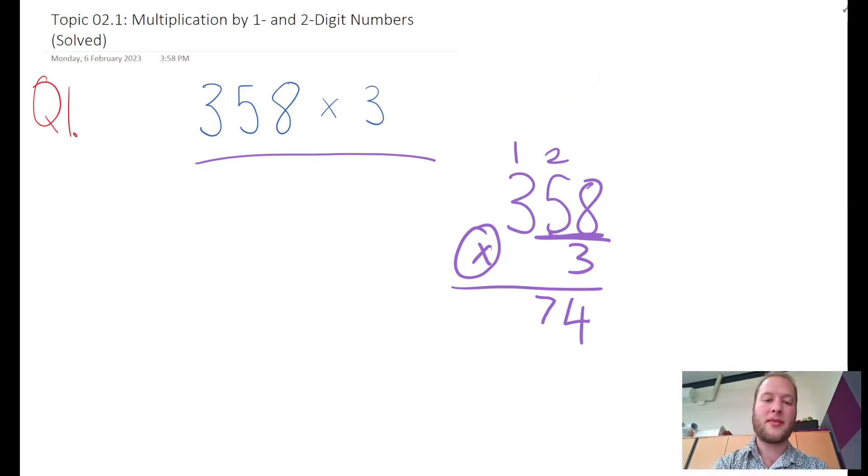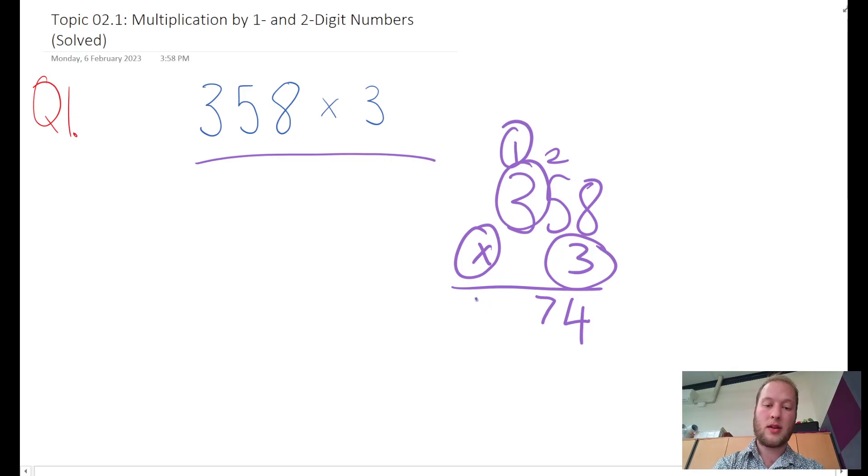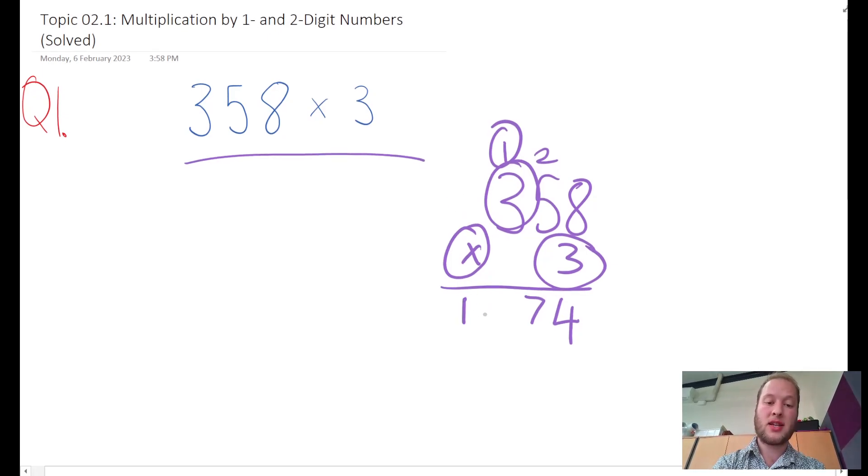Now it's the last one: 3 times 3, and that is 9. If you didn't know, 3, 6, 9, and then add my remainder is 10. There's no numbers to put into my place value here, so I'm just going to write 10 at the bottom.